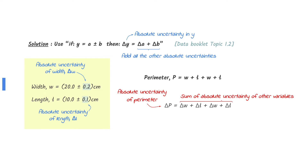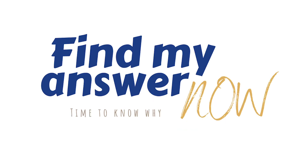add the absolute uncertainty of length twice and the absolute uncertainty of width twice. The absolute uncertainty of the perimeter is 0.6 centimeters. I'll see you in the next one!